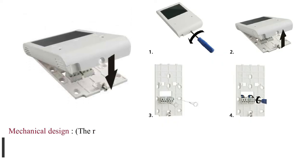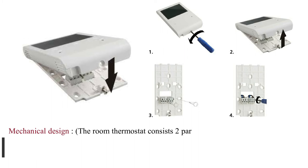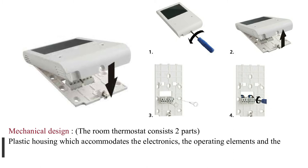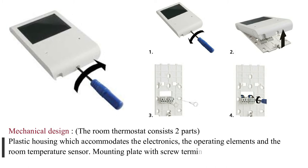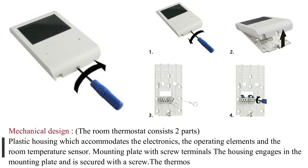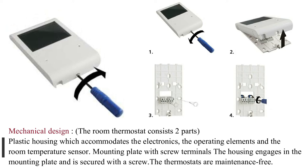The room thermostat consists of two parts: a plastic housing which accommodates the electronics, the operating elements and the room temperature sensor, and a mounting plate with screw terminals. The housing engages in the mounting plate and is secured with a screw. The thermostats are maintenance free.